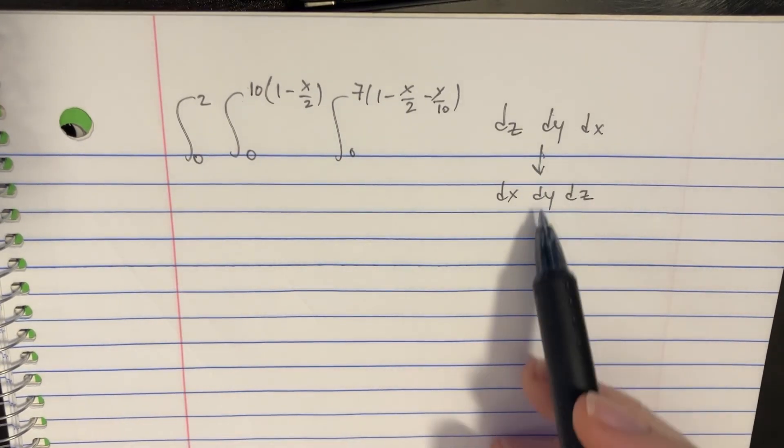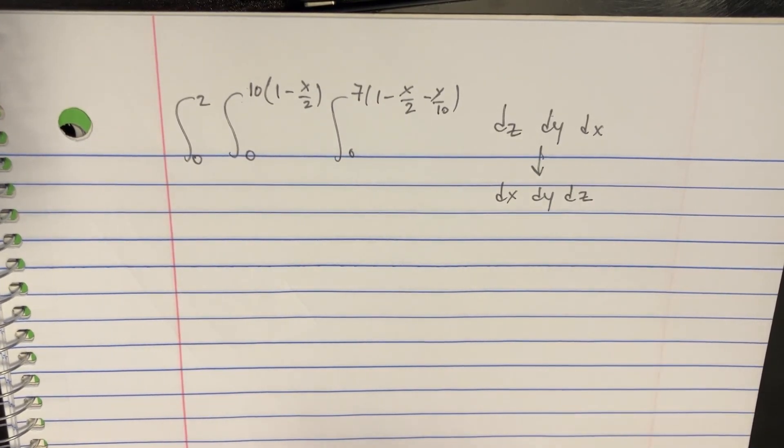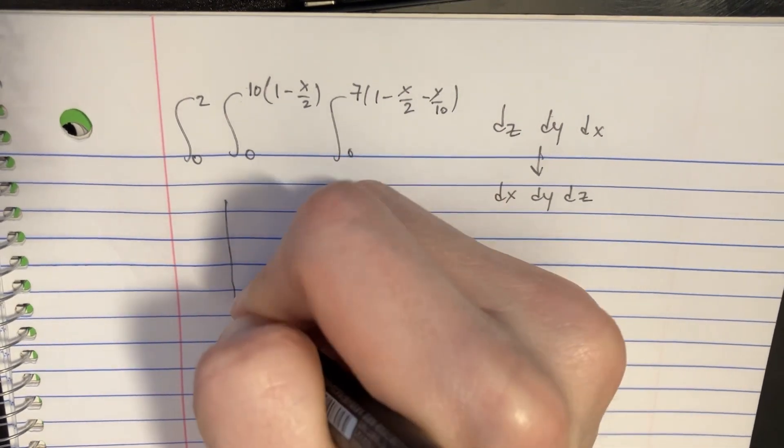So we have this integral, and we want to reverse it to make it dx, dy, and dz. In order to do that, let's go ahead and draw this out.